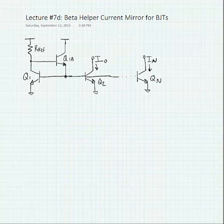In this last set of slides we're going to look at a beta helper current mirror for BJTs. We're going to add a buffer transistor to reduce the current error that we see when we connect multiple transistors to a single bias generator.